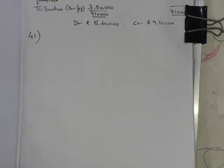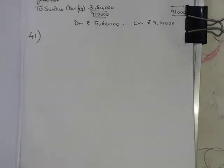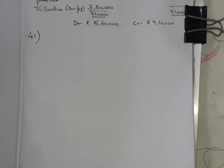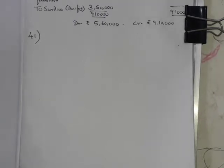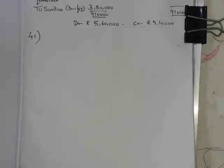On the payment side: salaries of nurses — yes, take it for computation. Next, board, laundry and domestic help — yes, recurring in nature, take it. Rent, rates and taxes — recurring in nature, take it. By cost of car — car is a fixed asset, so you are not supposed to take the cost of car.